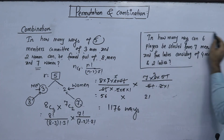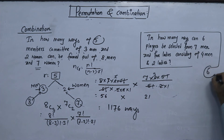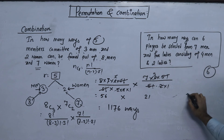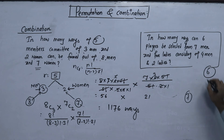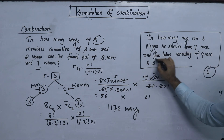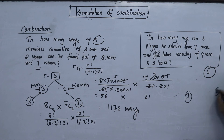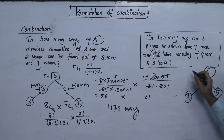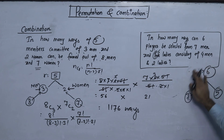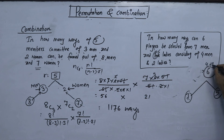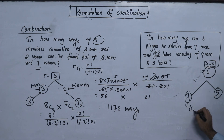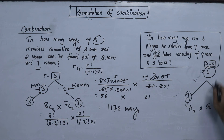The next question: In how many ways can 6 players be selected from 7 men and 5 ladies, consisting of 4 men and 2 ladies? Total 6 players from 7 men and 5 women — we need 4 men and 2 ladies.